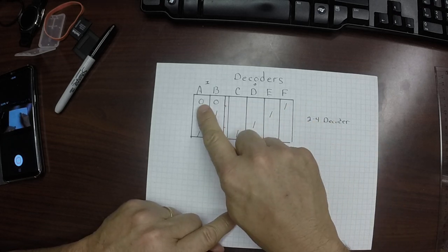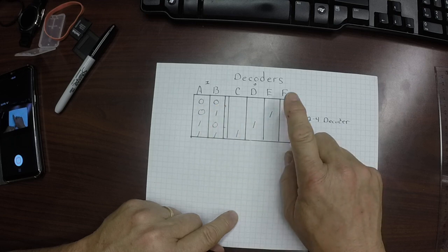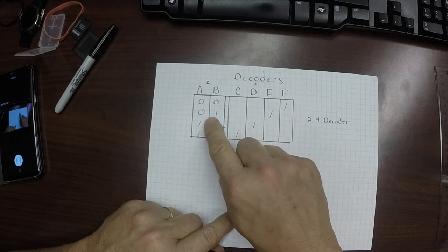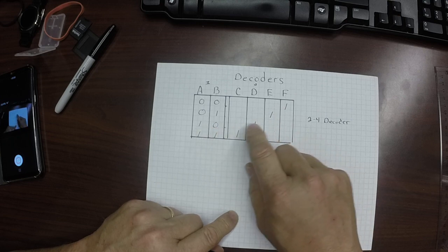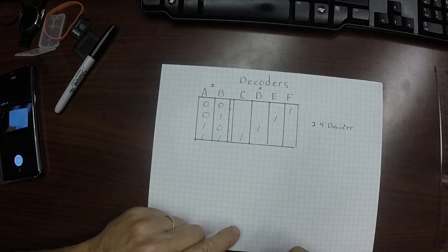So what we want to do is if the inputs are 0,0, we want to turn the F wire on. If it's 0,1, we want to turn the E wire on. If it's 1,0, we want to turn the D wire on. Or if it's 1,1, we want to turn the C wire on and leave everything else 0s.